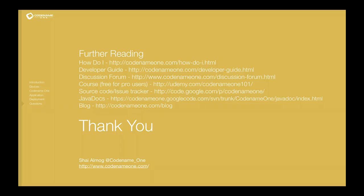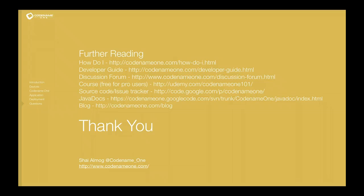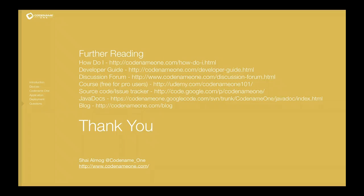The developer guide is incomplete always, but it's over 200 pages of information about Codename One. The Java docs are probably a better, more complete and recent version of what's actually available. But there are always updates in the blog with more and more details, and the discussion forum is always a place where we answer things.